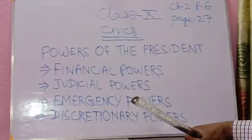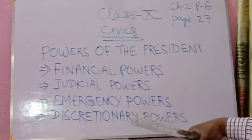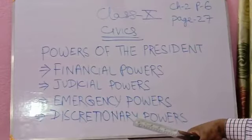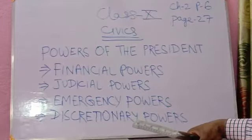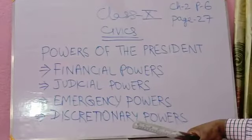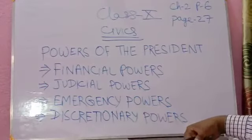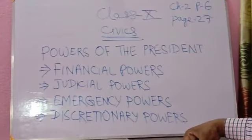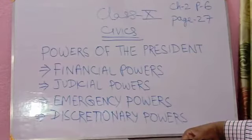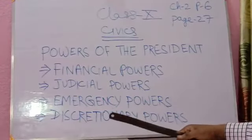The second type of emergency is constitutional emergency. The president is empowered to declare an emergency when there is a failure or breakdown of the constitutional machinery of any state of the union. The third type is financial emergency — the president can declare a financial emergency when there is a financial breakdown or danger to the financial stability of the nation.